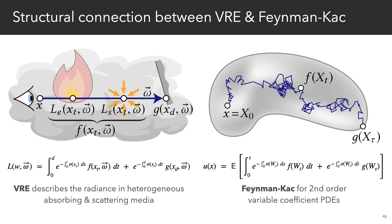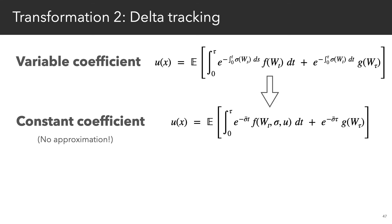And as a result, transformations like delta tracking used in computer graphics to solve the VRE can be applied to the Feynman-Katz formula as well. So here we basically move the variable coefficient sigma to a recursively defined source term f as in the PDE setting.